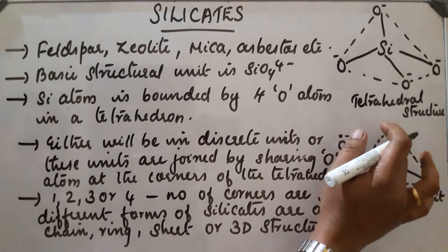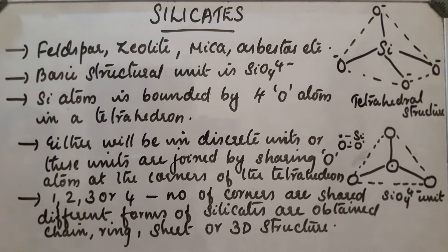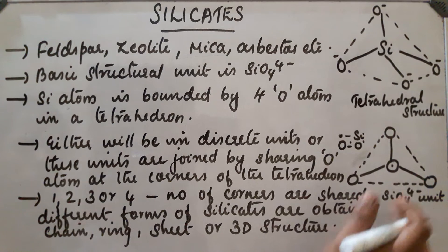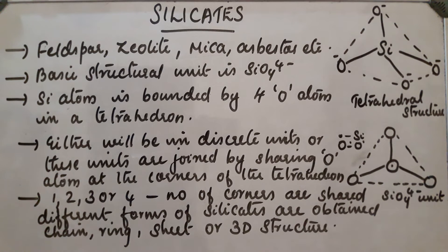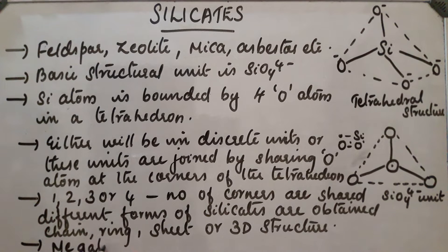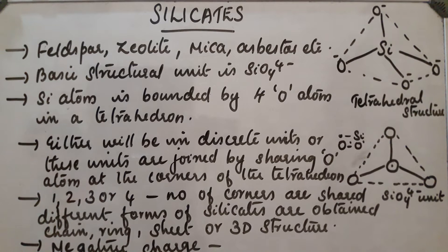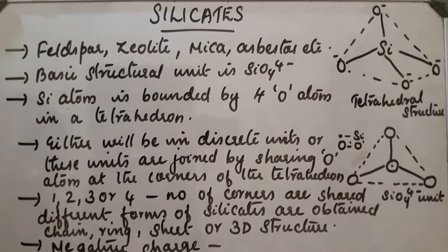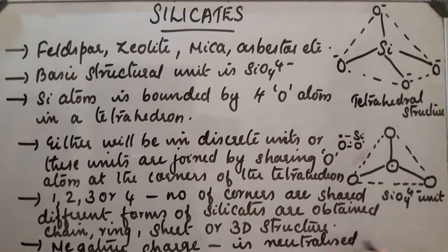As a result of this combination of different units, there will be negative charge on the structure. This negative charge is neutralized by positively charged metal atoms.